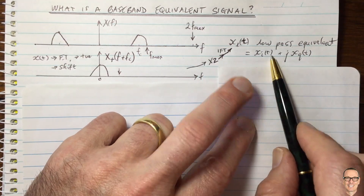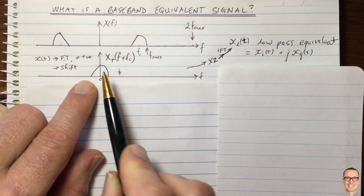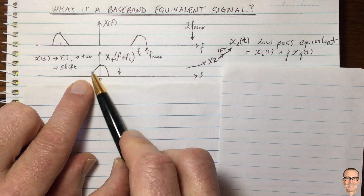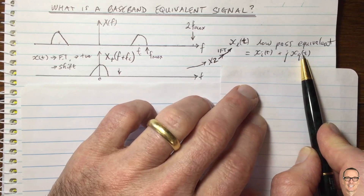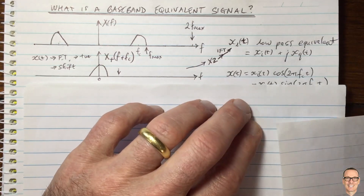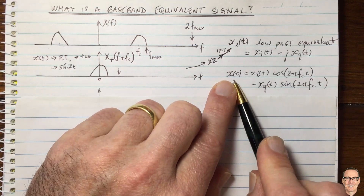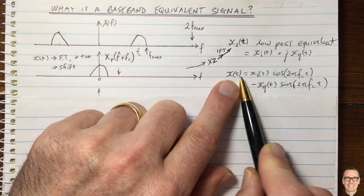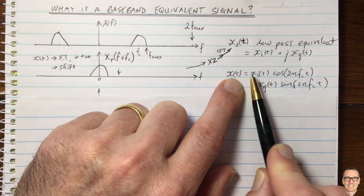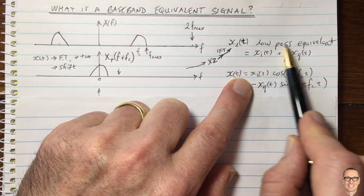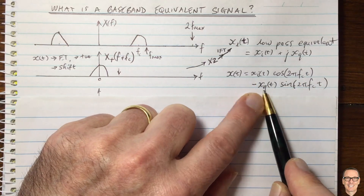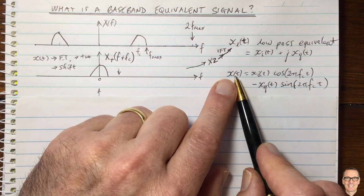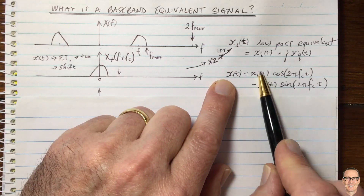If the low-pass equivalent is itself symmetric, we only have a real part — this is called real baseband. If it is not symmetric, we have complex baseband. The actual passband signal X(t) can be written in terms of the low-pass equivalent as: X(t) = XI(t) × cos(2π·FC·t) minus XQ(t) × sin(2π·FC·t). This is the key relationship between the passband signal and its baseband equivalent.